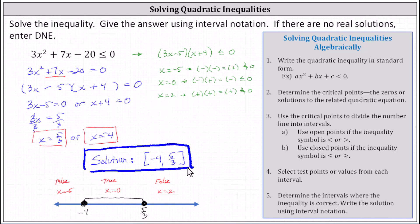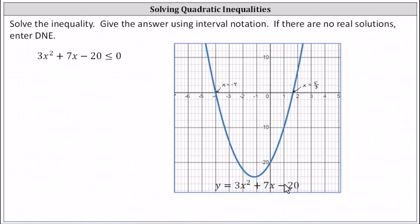Before we go, let's verify our solution by graphing the related quadratic function y = 3x² + 7x − 20. Here's the graph — notice the two x-intercepts are the critical points we found. Because we're looking for where 3x² + 7x − 20 ≤ 0, we look for the part of the graph where y is less than or equal to zero, meaning on the x-axis or below it.